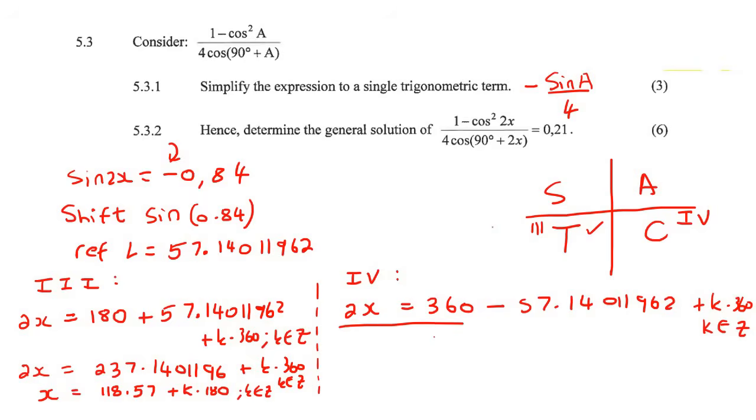And then we're going to go do the same process for this one over here now. And so if you had to put those two numbers together, you're going to get 302.8598804 plus k360, k is an element of z. And now we're just going to go divide everything by two. And so now we can round off to two decimal places. That's 151.43 plus k times 180, k is an element of z.